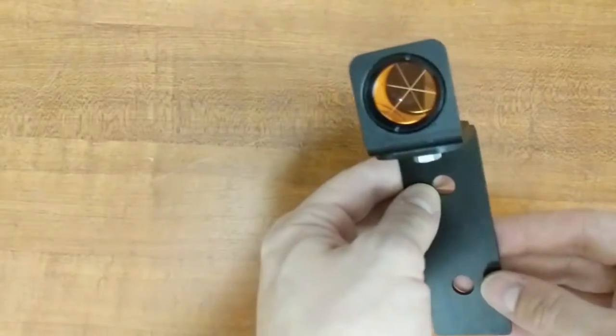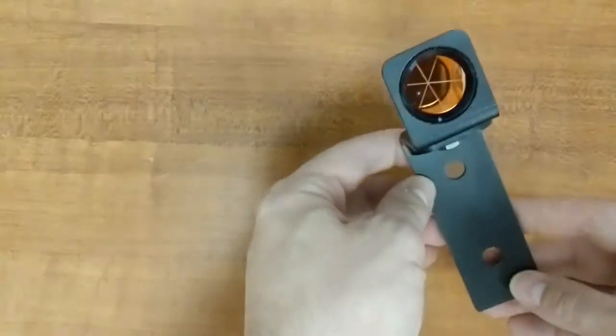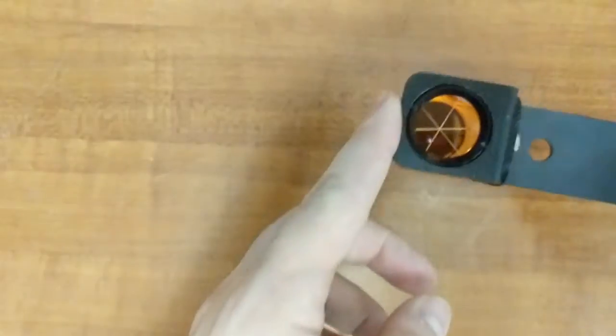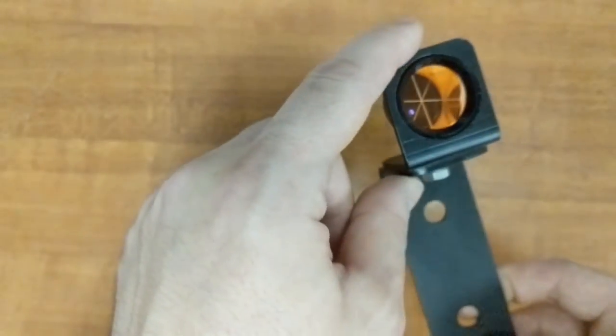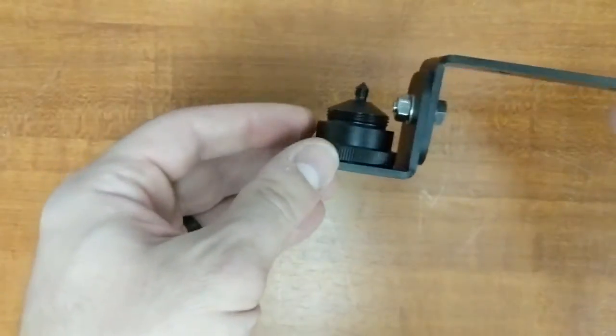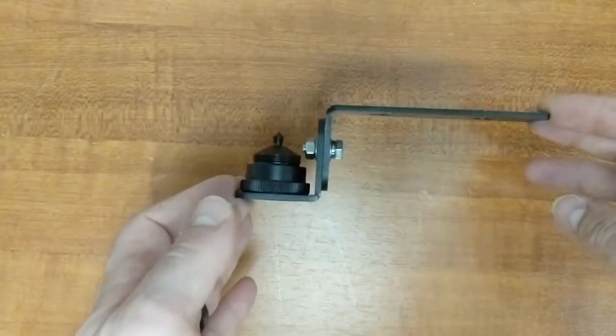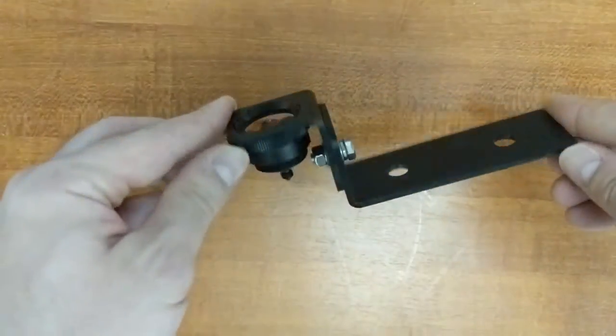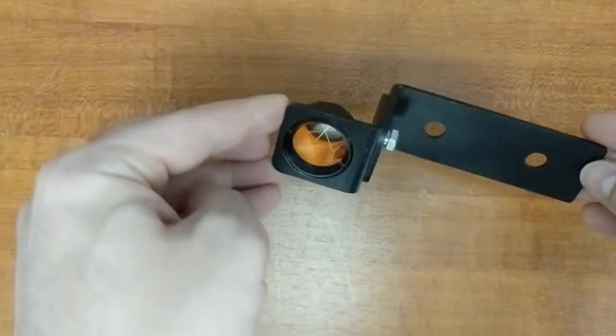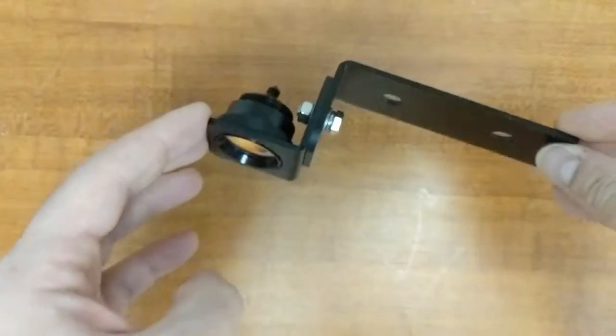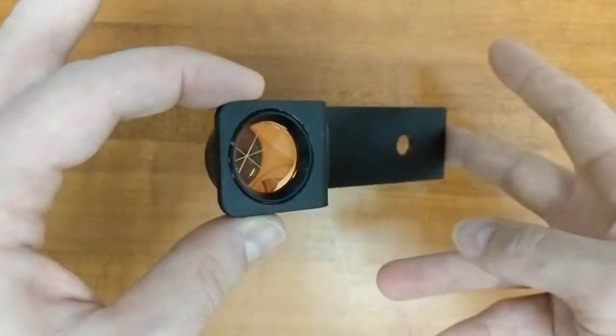The next prism that we have is the Lightweight Mini Prism, which is the same 25.4 millimeter glass with an 8.9 millimeter offset on a much more pared down lightweight body that is going to be more suited for any applications where you might need to epoxy a lighter weight, lower profile prism.